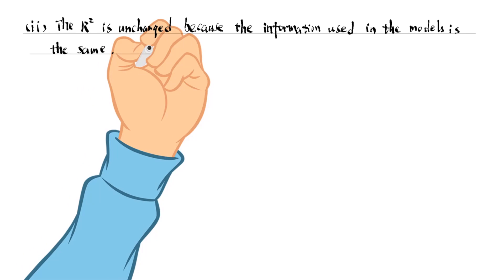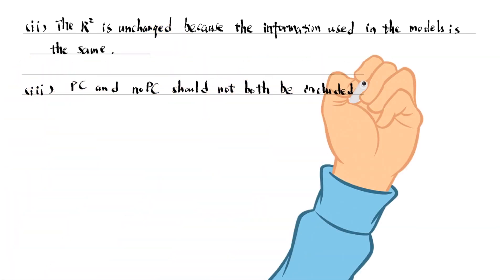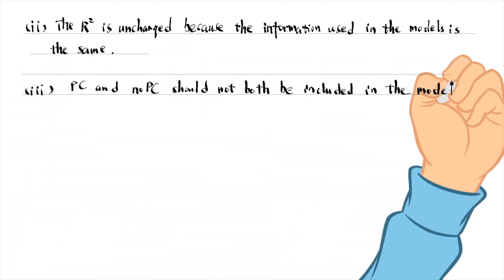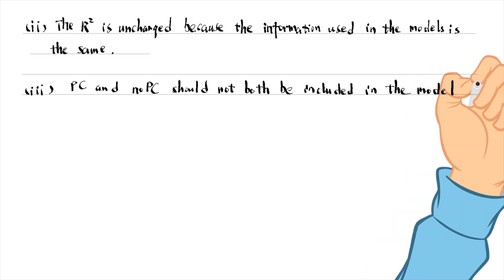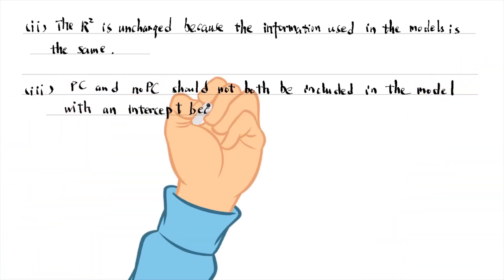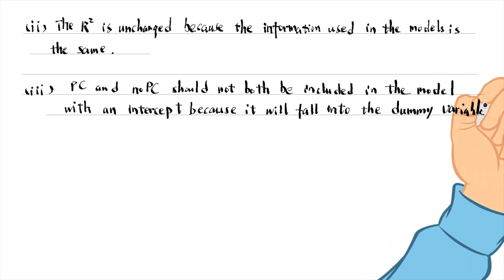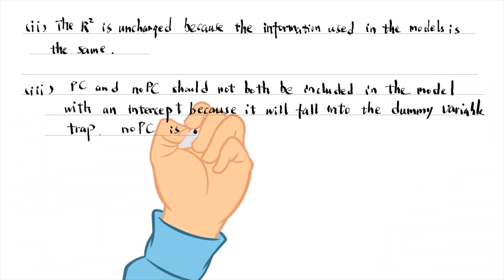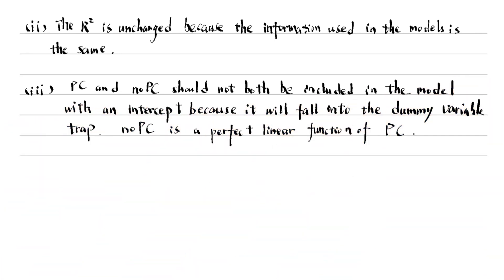For part 3, pc and no pc should not both be included in the model along with an overall intercept because it will fall into the dummy variable trap. No pc is a perfect linear function of pc.